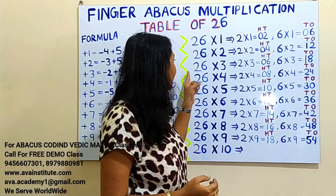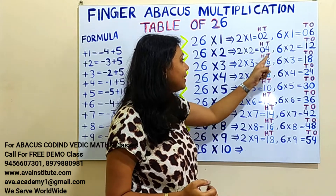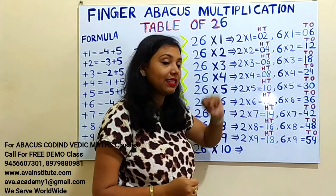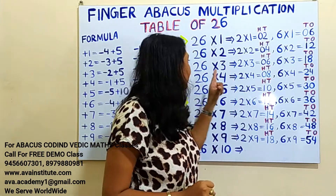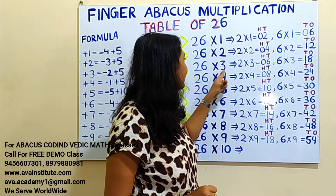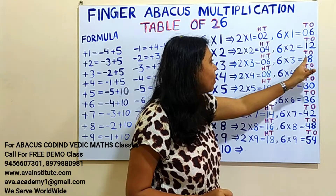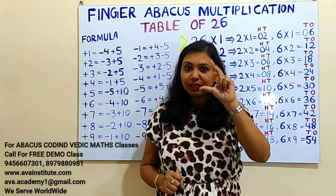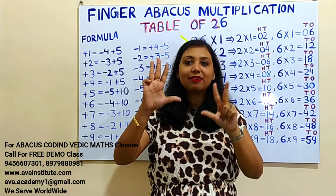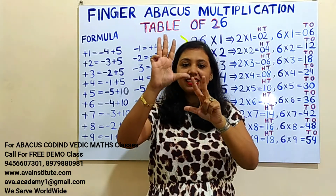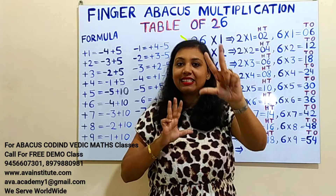26 threes are: 2 threes are 6 — in hundreds 0, in tens 0, in ones 6. Now 6 threes are 18 — in tens 1, in ones 8. So the answer counts up: 50, 60, 70 — 70, and then ones 5, 6, 7, 8. The answer is 78.